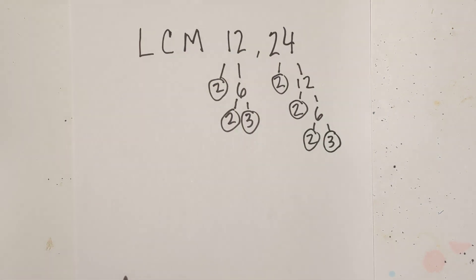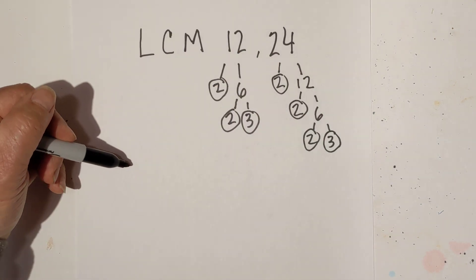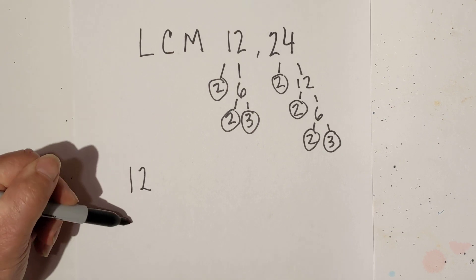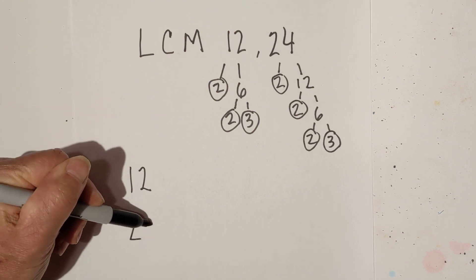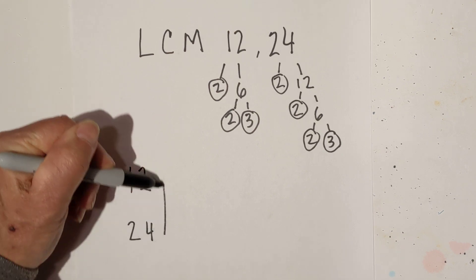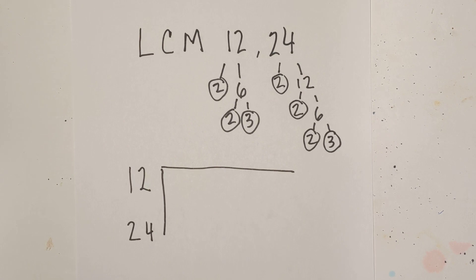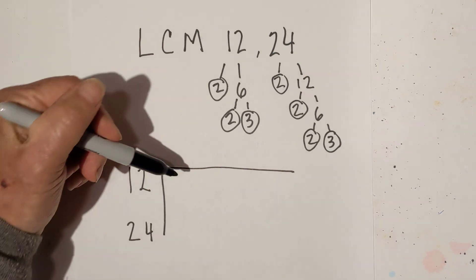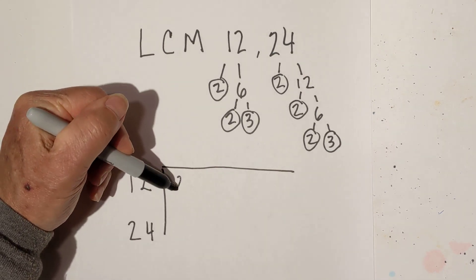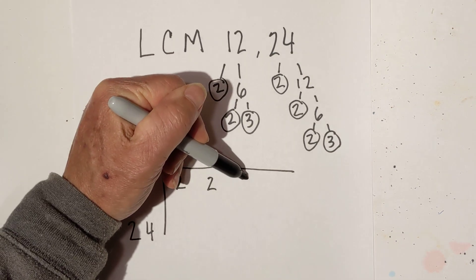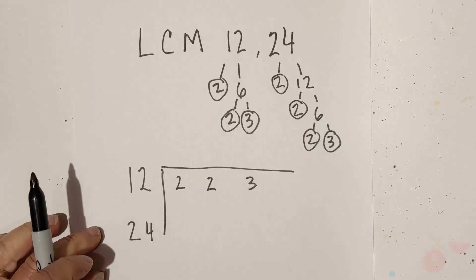So now we are down to prime numbers, so we're finished. Now what I do is I use a chart for 12 and 24. So I'm going to write the numbers in. We've got 2, and 2, and 3.